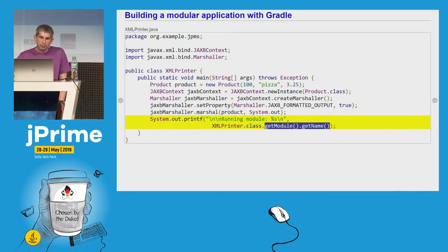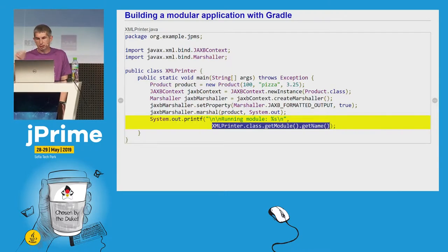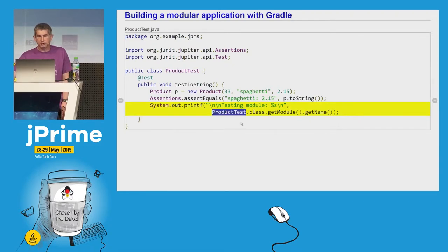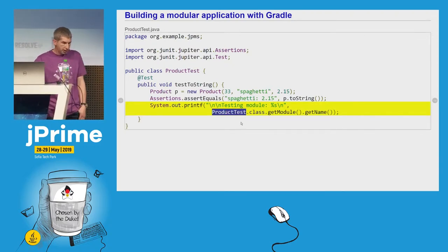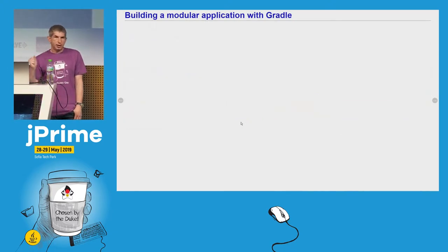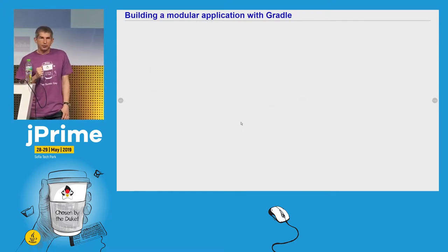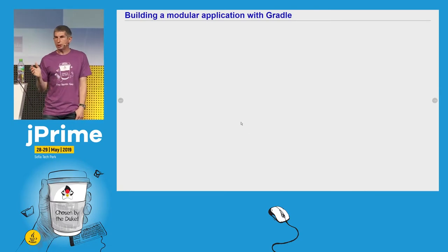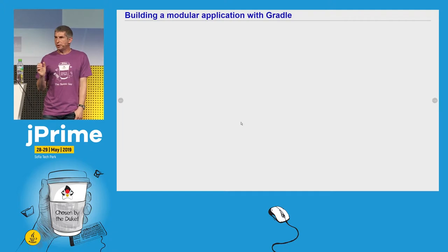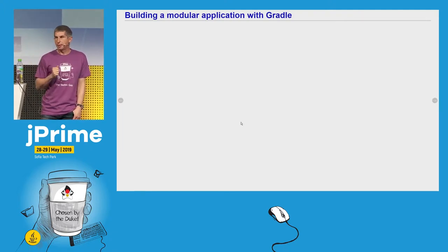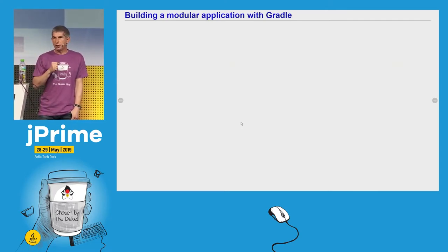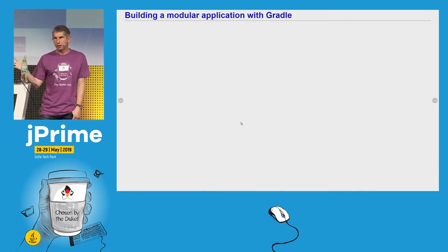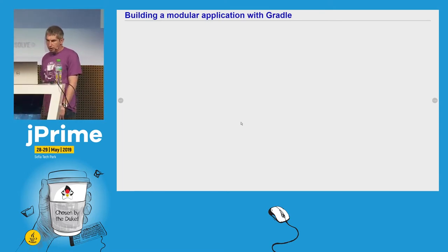We do the same with our unit test class in order to see whether the tests have been executed on the class path or on the module path. The first time when I tried to build a modular application, I thought that I don't need to make any changes to my Gradle build script — I thought that Gradle provides native support for the Java module system. But I quickly found out that this is not true. The good news is that since then, a Gradle plugin for the Java module system has been created and you should use this plugin. But in order to understand what this plugin does for you, it's interesting to see how to build your modular code without it.